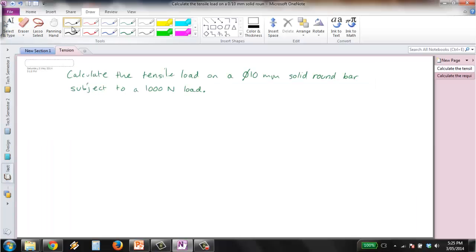First example here is pretty basic. We just want to calculate the tensile load or stress on a diameter 10mm solid round bar subject to a 1000N load. First thing we just need our basic equation, so stress equals F on A.